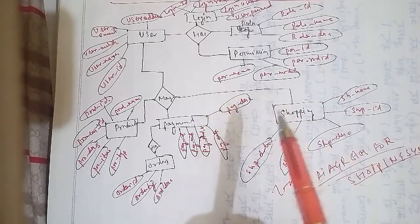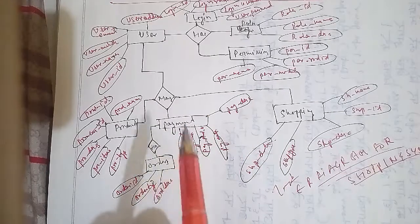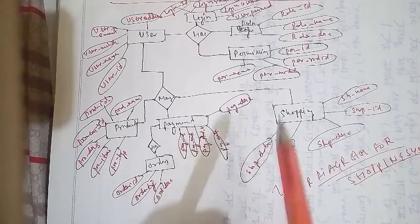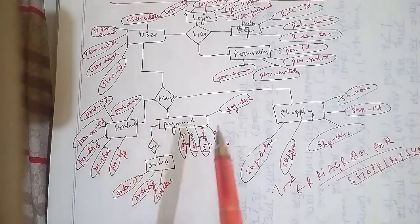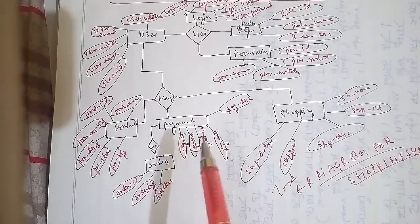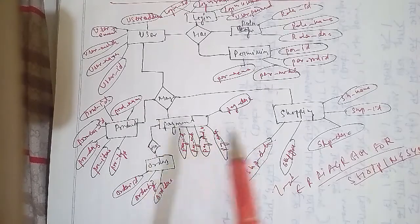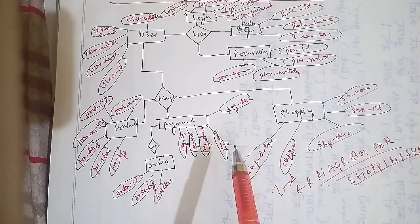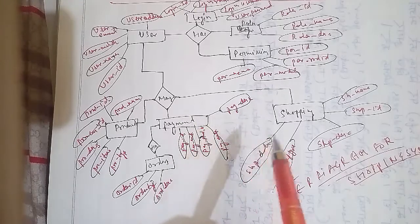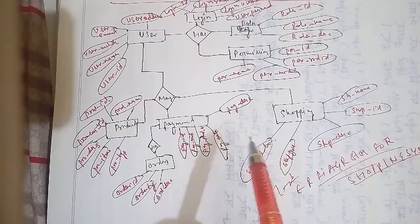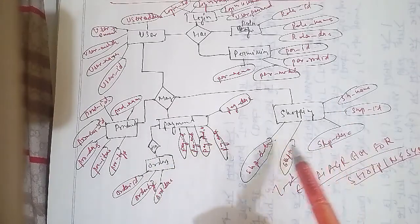We also covered Quantitative Aptitude, where we started with operations on numbers, decimal fractions, simplifications, ratio problems, problems on ages, percentage — which is the 10th topic. We are also dealing with DBMS, covering different ER diagrams as per your requirement and choice.